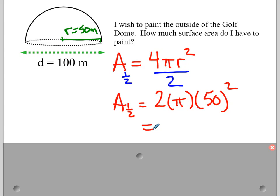Better double check my calculations here. My calculator's doing wonky things. 2,500 times that becomes 5,000 times that. Yeah, that looks about right. And this would be in square meters. So that would be 15,700 square meters painting the outside of the golf dome.